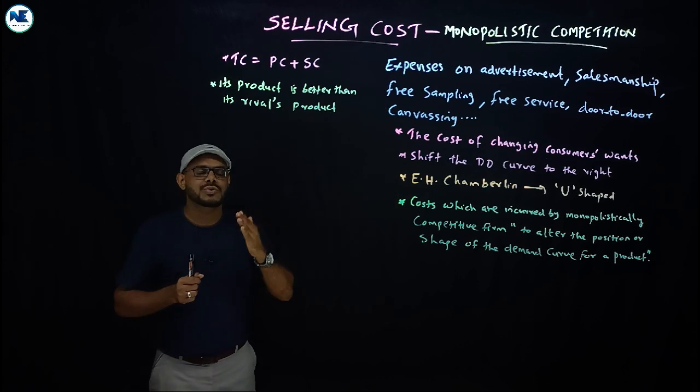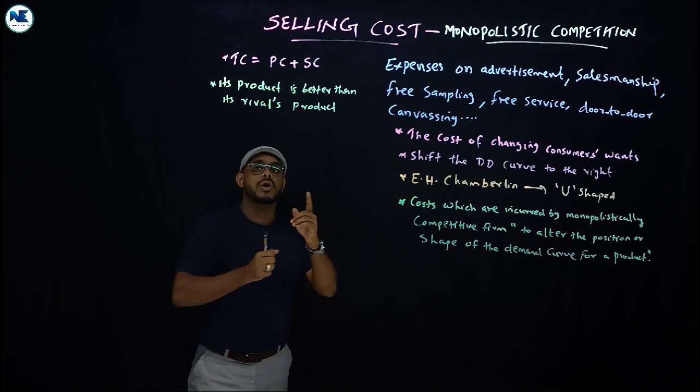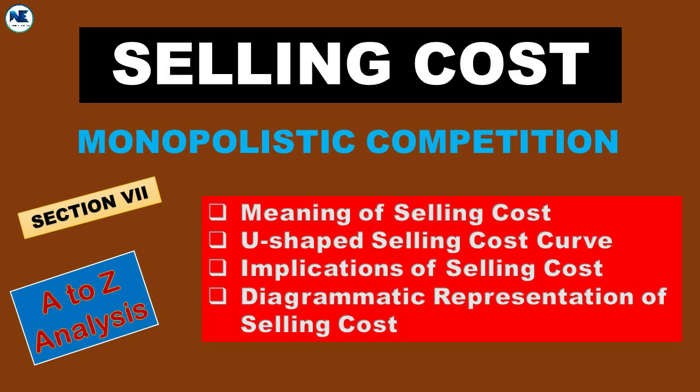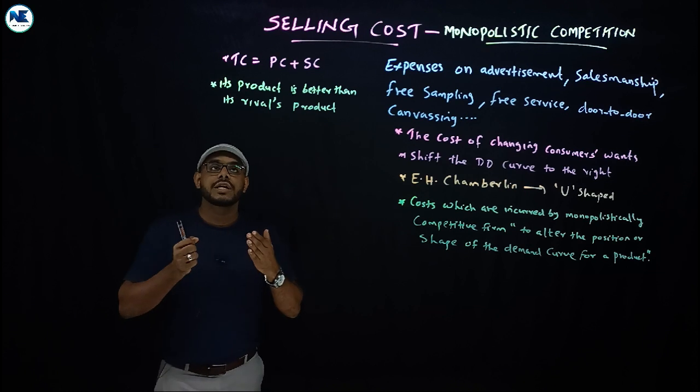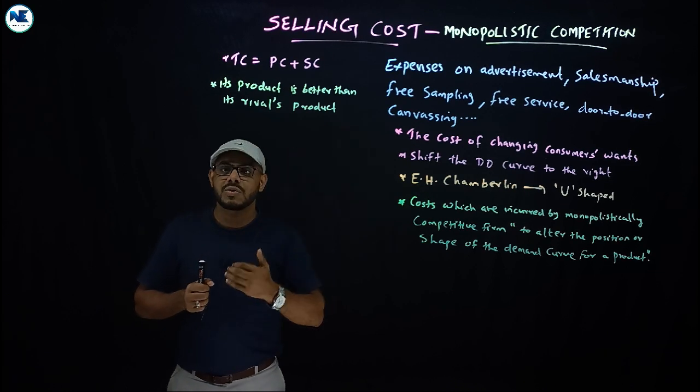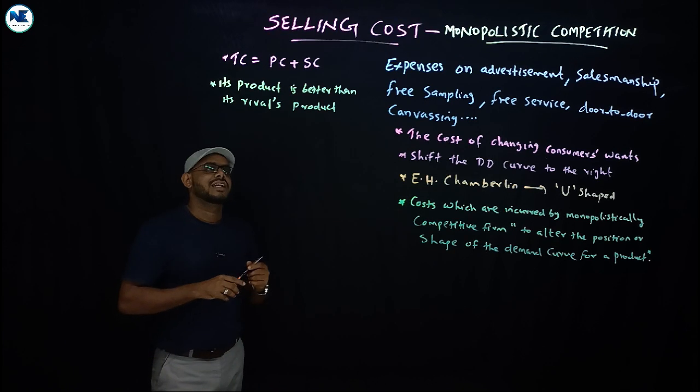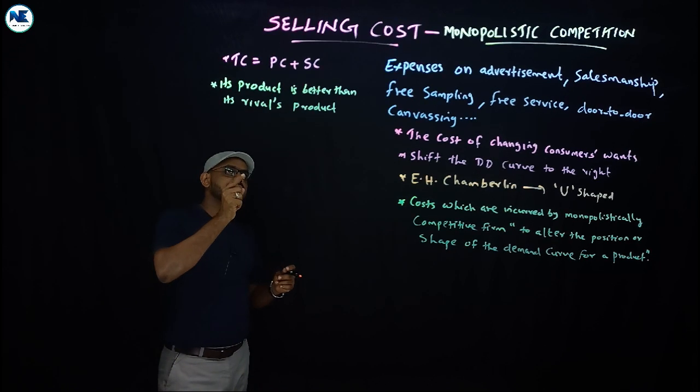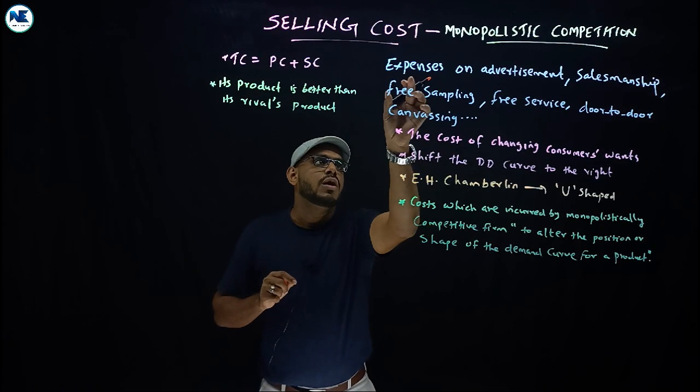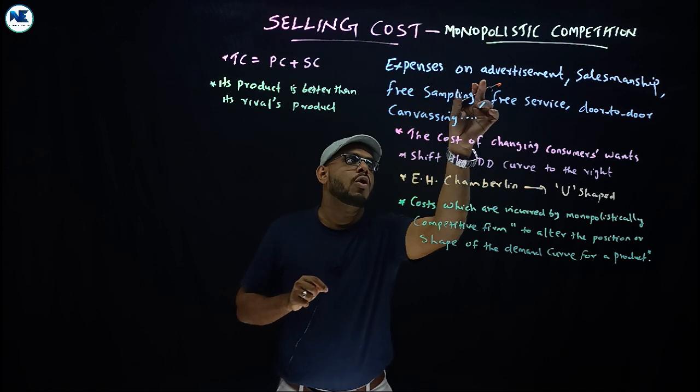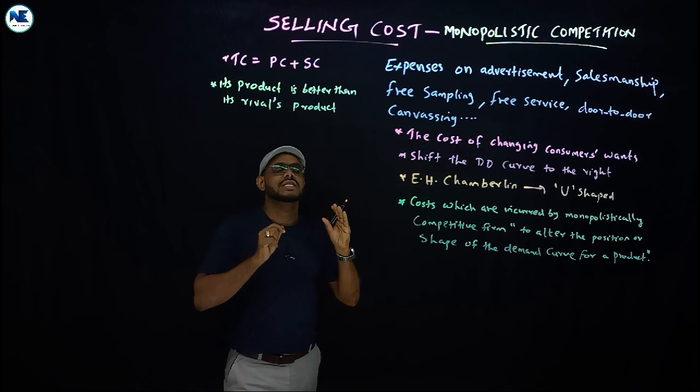What is the first point associated with selling cost? It is a special feature of monopolistic competition. What is the real meaning of selling cost? What is the purpose of selling cost? Who introduced the concept of selling cost for the first time? The simple meaning of selling cost is the expenses on advertisement. The major component of selling cost is advertisement.